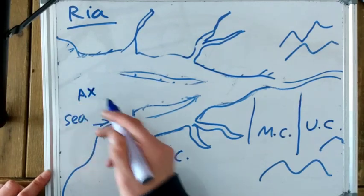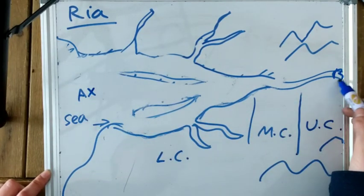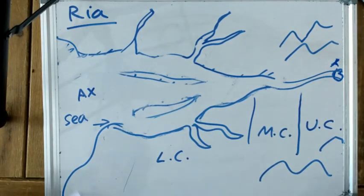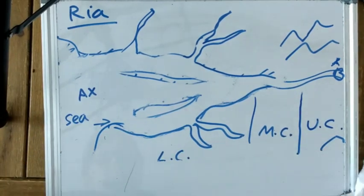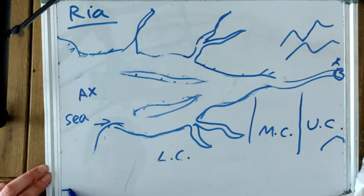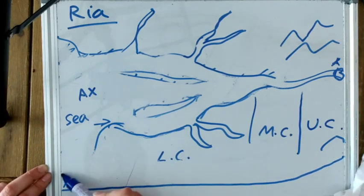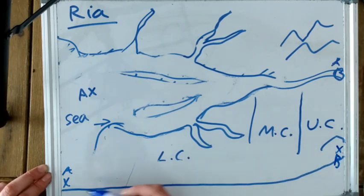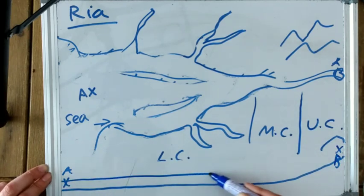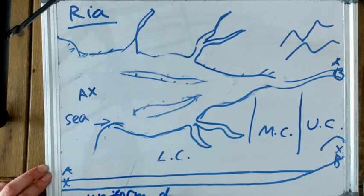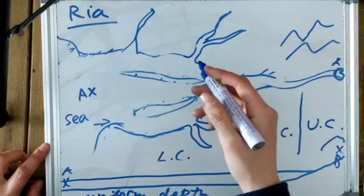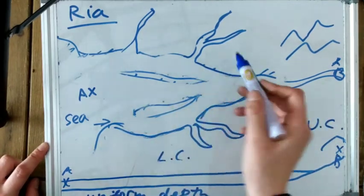Now we're going to look at the longitudinal profile. A is just at sea, and B is right in the upper course at the source of the river. A is at the mouth of the river — or rather, in the estuary. As you can see, A is in the sea and B is nice and high up in the mountains. Generally it's quite a uniform depth all along, with waterfalls and such nearer to B.